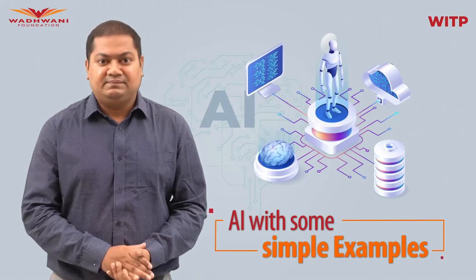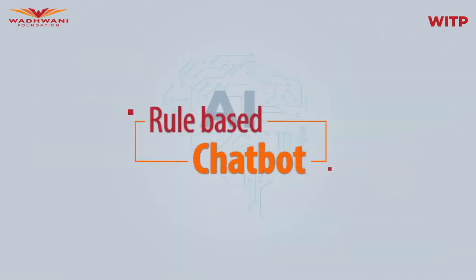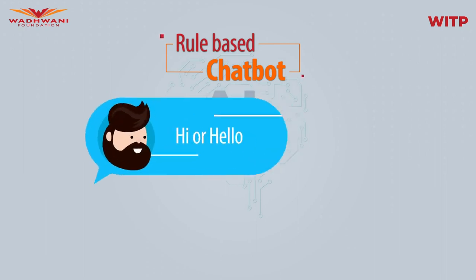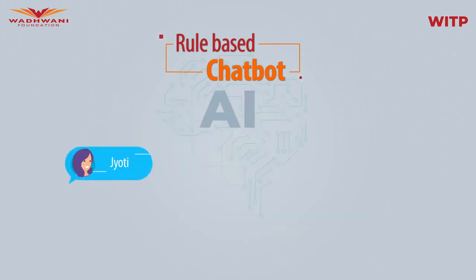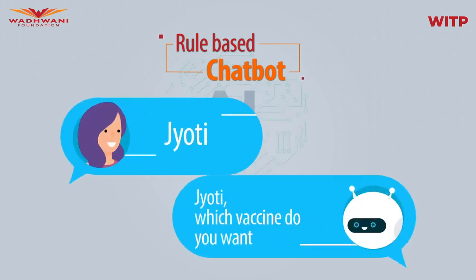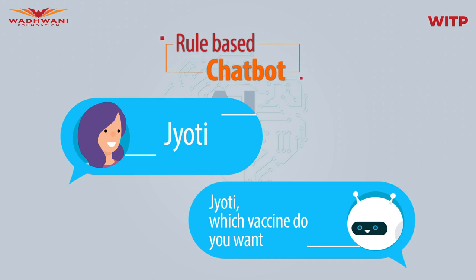Let's start understanding AI with some simple examples. The first one is a rule-based chatbot. We can hard-code some if-else conditions — for example, if a person says 'hi' or 'hello,' the algorithm will say 'hi, what's your name?' or 'hello, what's your name?' depending on what the user said. If the user says 'Jyoti,' the chatbot will use the name and say 'Jyoti, which vaccine do you want?'